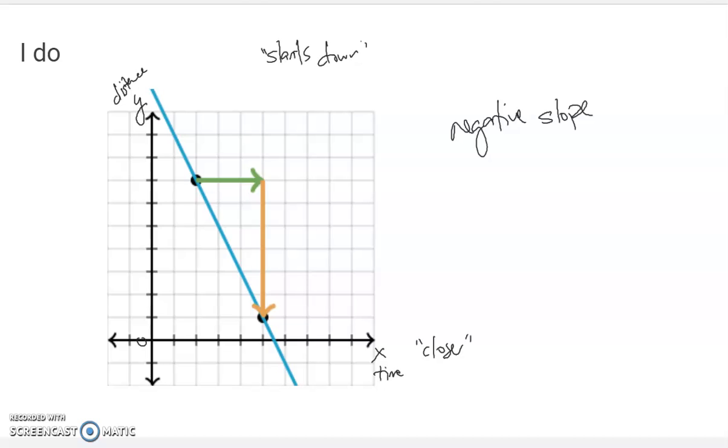And so negative slopes I want you to think about are ones like that, where the thing would be getting closer if we did a time distance graph. We're not going to call it that. It's still just going to be y and x. If you're comfortable saying this slants down versus this slants up, that's okay.